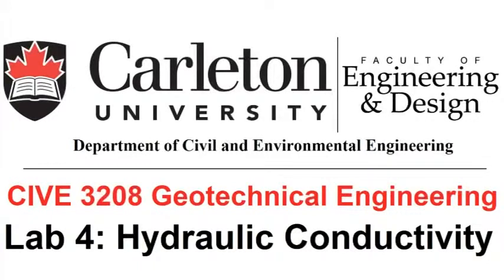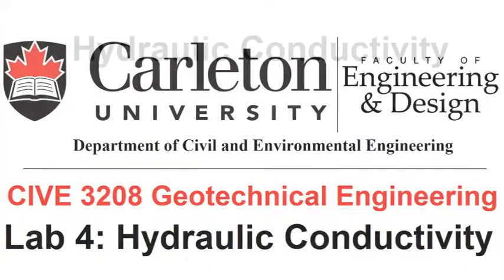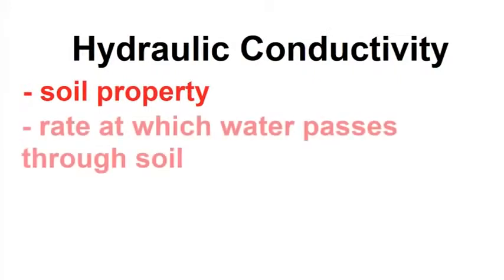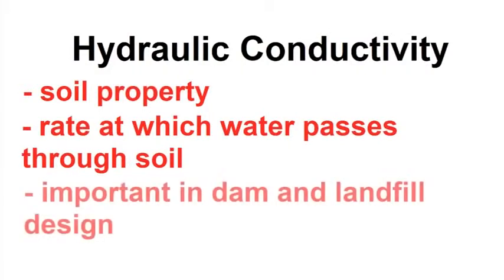This is a tutorial for the Hydraulic Conductivity Lab of the Geotechnical Engineering course, Civ E 3208. The purpose of this lab is to determine the hydraulic conductivity of a soil sample. Hydraulic conductivity is a property of the soil which determines the rate water will pass through it. It is important to be able to measure hydraulic conductivity, as it is a factor in applications like dam and landfill design.